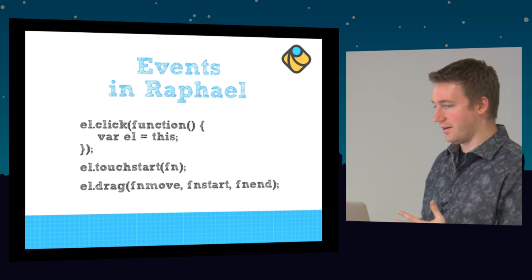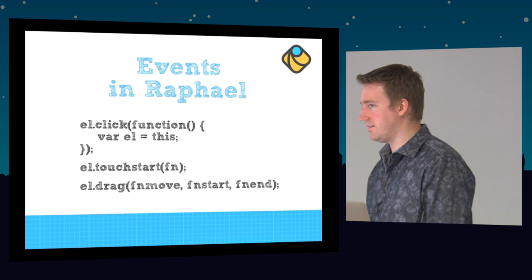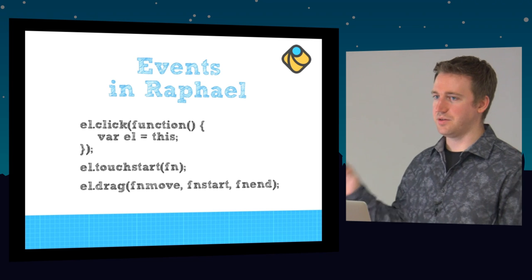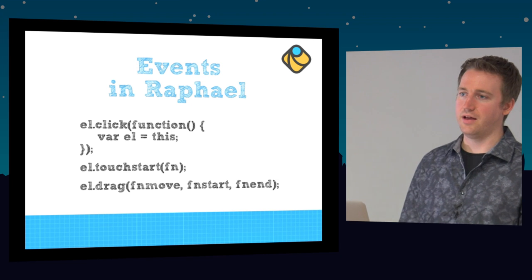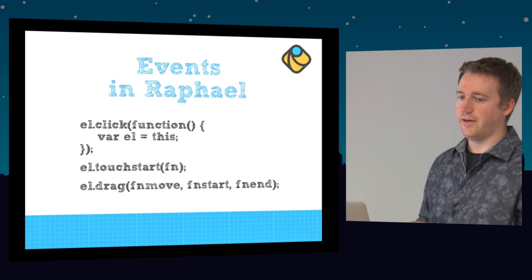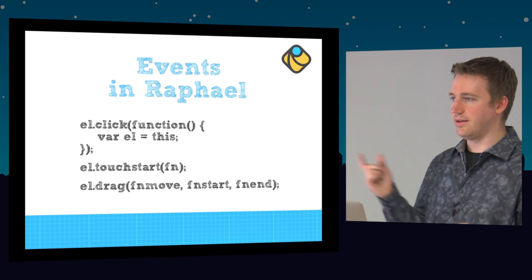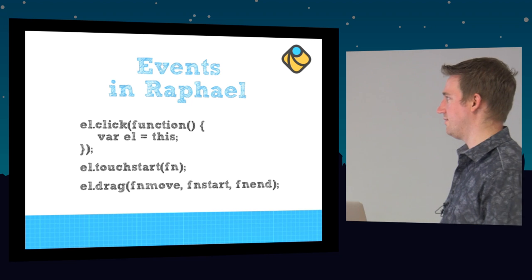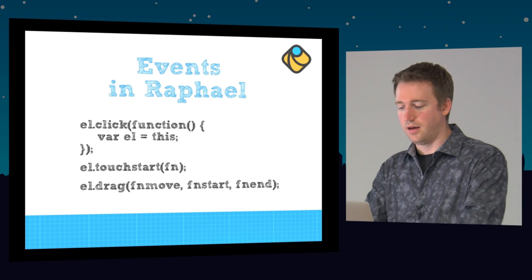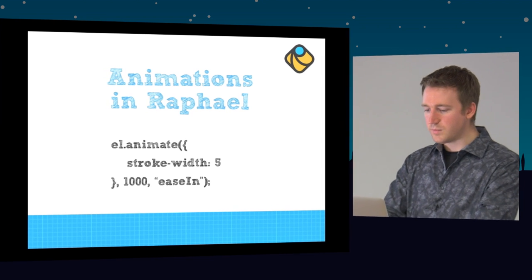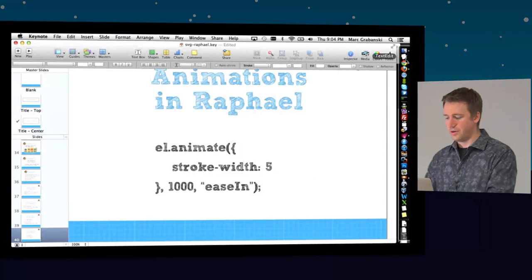Events in Raphael — we can do dot click, just like in jQuery. The touch start event exists, and drag actually maps to both click and touch events. When using the drag event in Raphael it actually works on the iPad — I built an app that works on desktop and then you pull out your iPad and the same drag code works. You pass in event handlers for when it's moving, start, and end. For animations, same thing as jQuery — I can animate the stroke width.